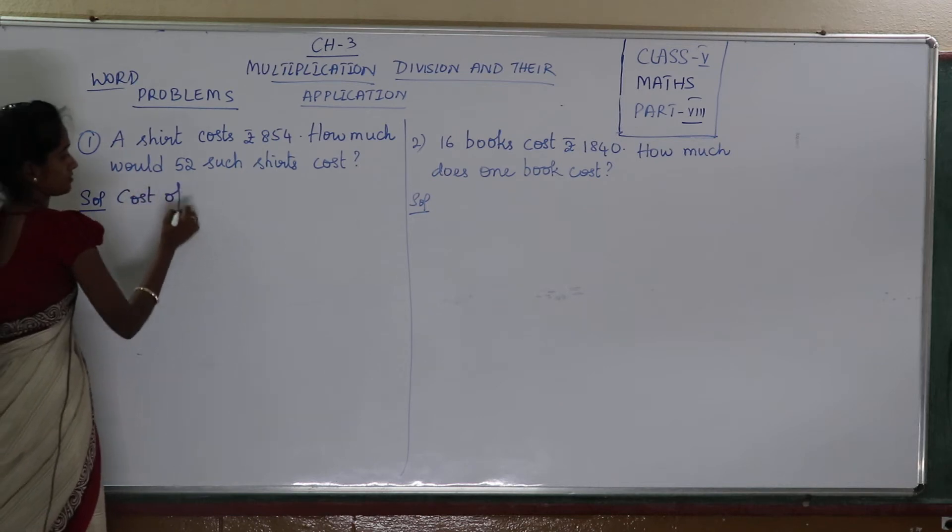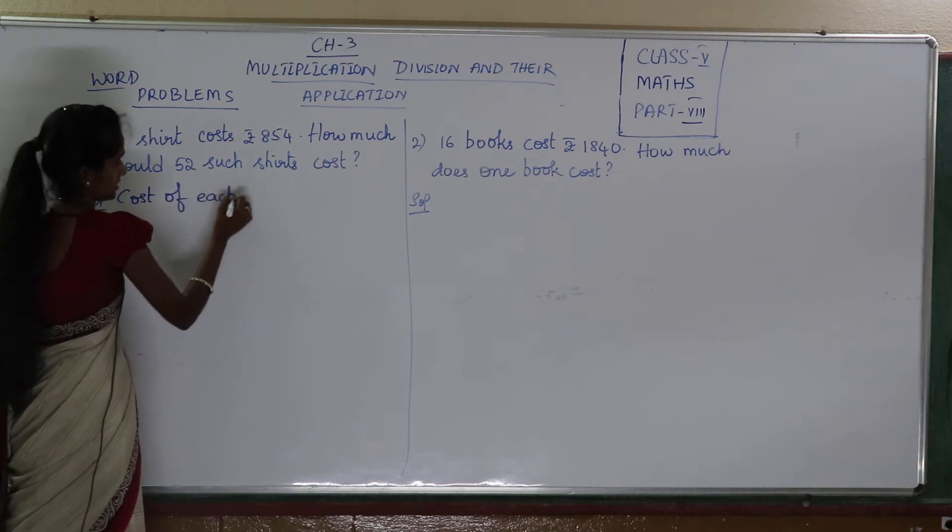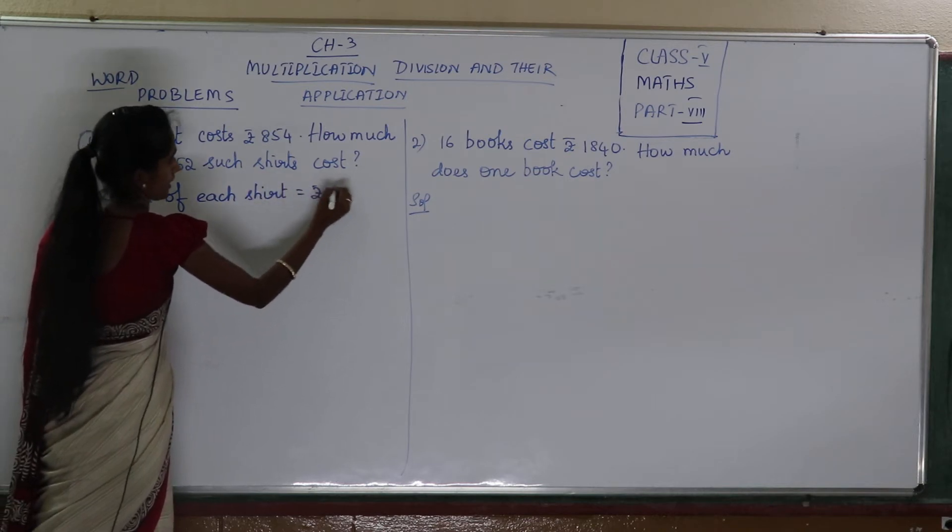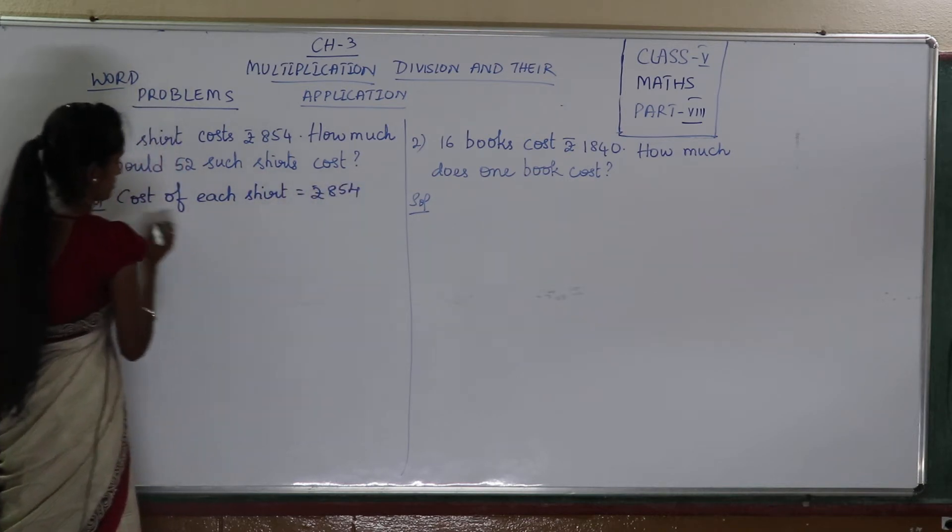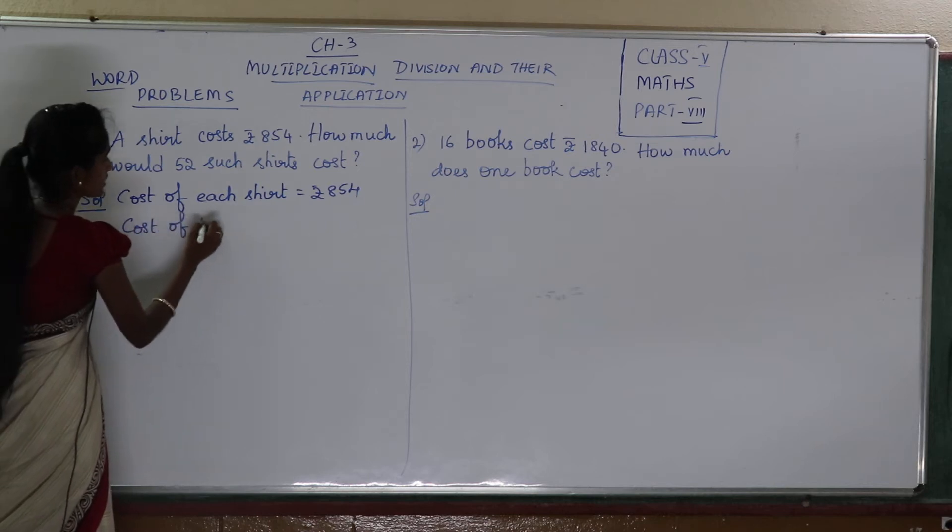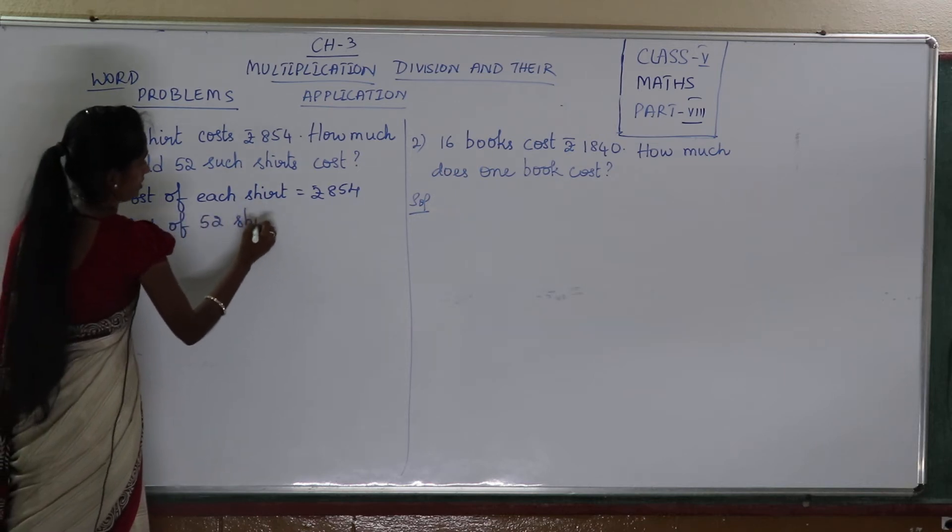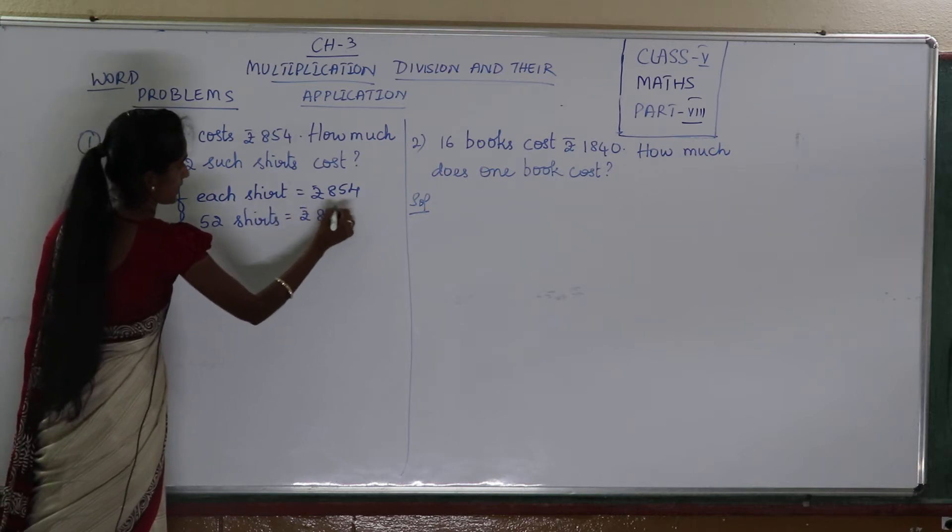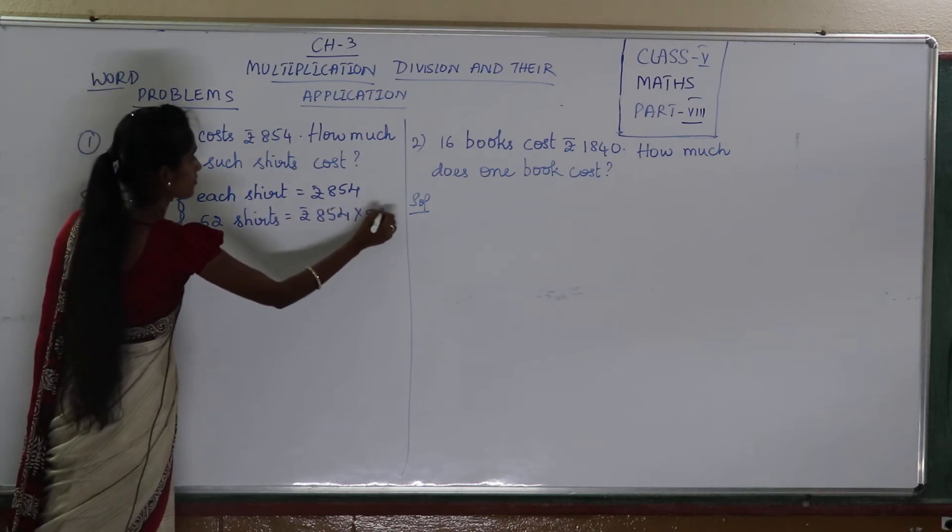Cost of each shirt is 854. Now, cost of 52 shirts is how much? See here, it's 854 into 52.